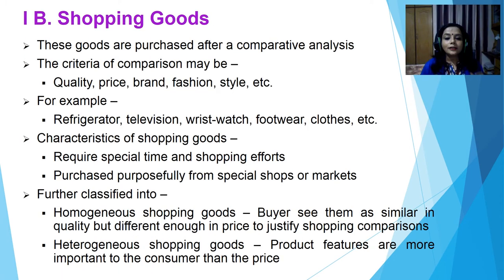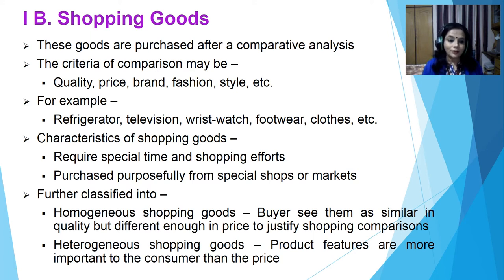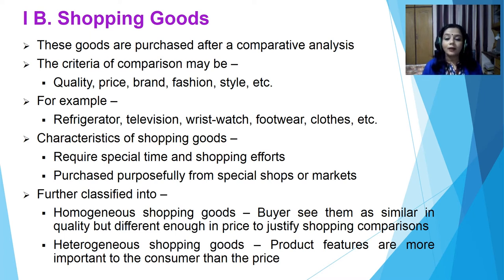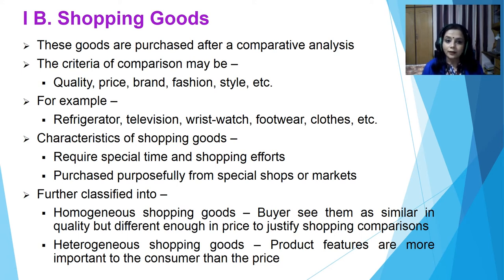The next category is shopping goods. These goods are purchased after comparative analysis and are chosen among various alternatives. They are a little more expensive than convenience goods, and buyers compare on the basis of quality, price, brand, fashion, style, get-up, color, etc. They require special time and shopping efforts and are purchased purposefully from special shops or markets. Examples include refrigerators, television, wristwatch, footwear, clothes, etc.